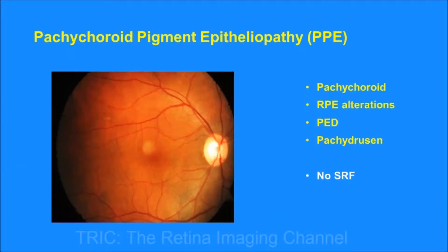Coming to pachychoroid pigment epitheliopathy, or PPE: by definition it should have pachychoroid RPE alterations. It can have pigment epithelial detachments and pachydrusen; however, it will not have any subretinal fluid.